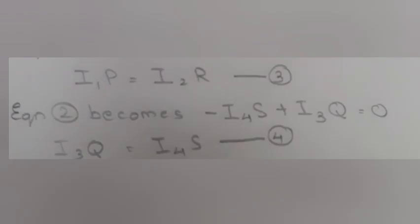Equation 1 becomes I₁P equals I₂R. Equation 2 becomes I₃Q equals I₄S. Fourth equation. Equation 3 by equation 4 equals I₁P by I₃Q equals I₂R by I₄S. Therefore P by Q equals R by S.